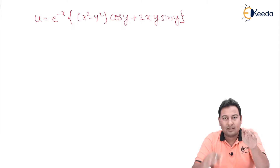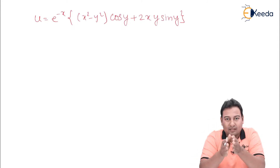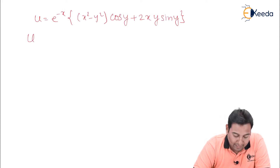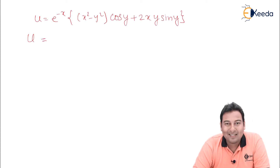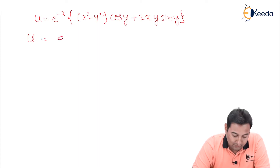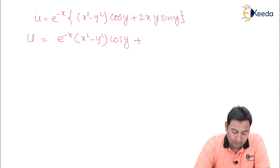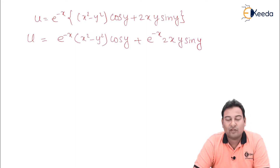So, u is equal to e raised to minus x, multiplied by the quantity x squared minus y squared, times cos y, plus 2xy sin y. This is the given problem and our aim is to find the analytic function f of z. We will multiply e raised to minus x inside, giving e raised to minus x times (x squared minus y squared) cos y, plus e raised to minus x times 2xy sin y.